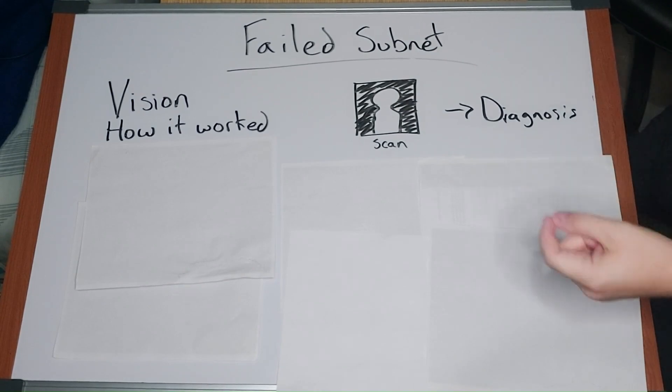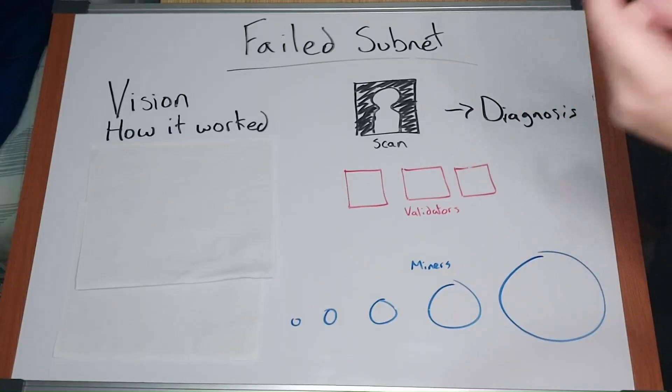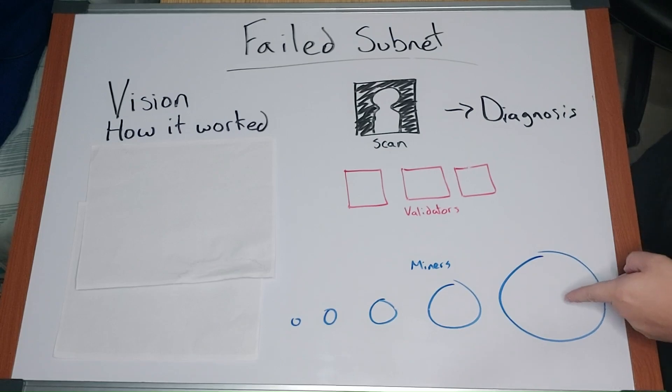Miners were responsible for training the AI. There was a public data set that was simply a mapping of image to diagnosis. There was about 100,000 of these mappings for miners to train on.